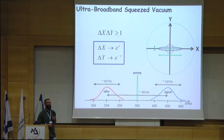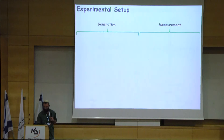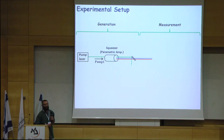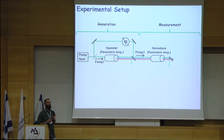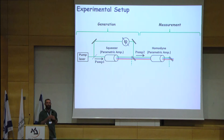A convenience of using parametric homodyne is that we can generate the squeezed light and measure it using the same mechanism, the parametric amplifier. The experimental setup is divided into two parts: generation and measurement. We have a first parametric amplifier generating the broadband squeezed state, and then we add a second parametric amplifier acting as a homodyne measurement with its own pump, so that we can control the gain and the phase of the pump — which defines the specific quadrature that we want to measure. All that is left to do is to measure the output spectrum.